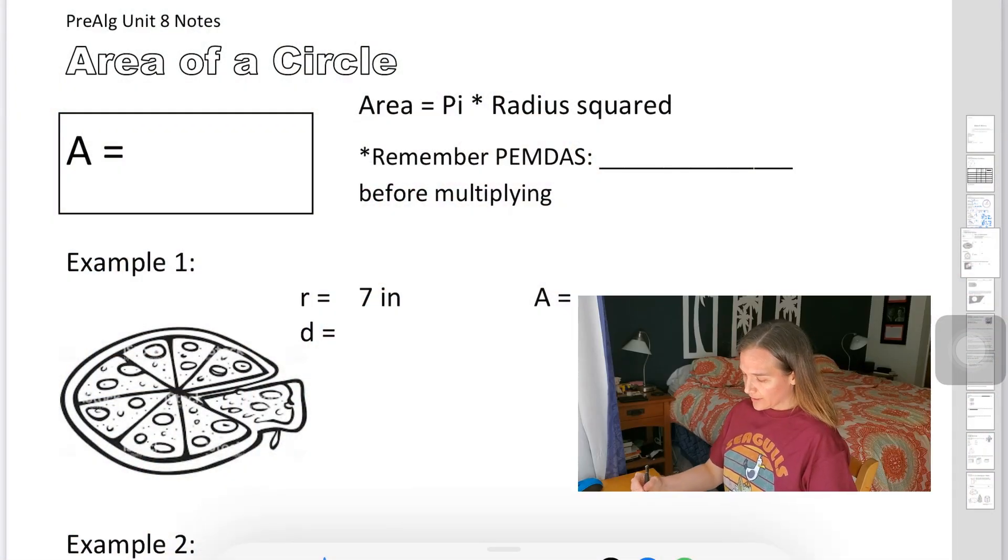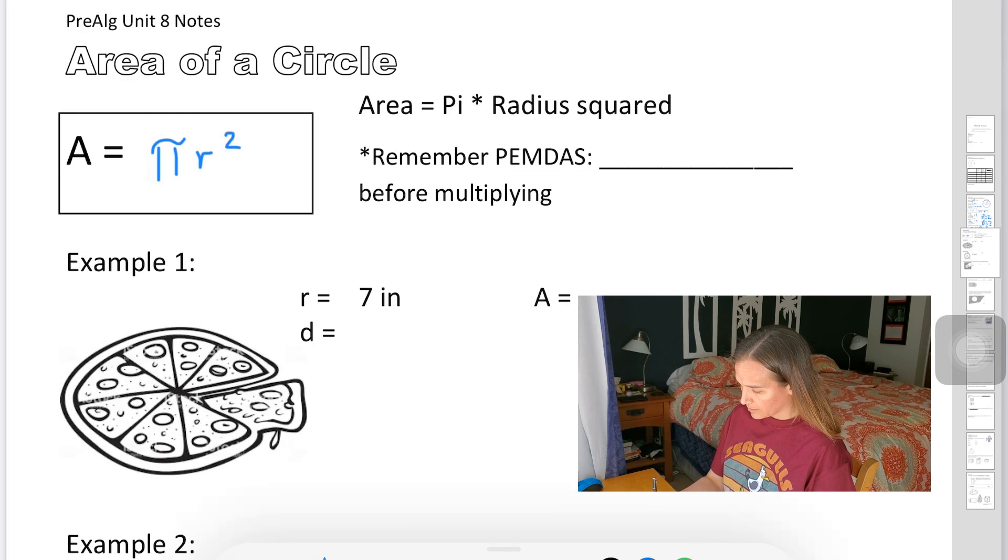If you take a look, we have area is going to be equal to pi times radius squared. The way to write this out, there we go, pi times radius squared looks like that.